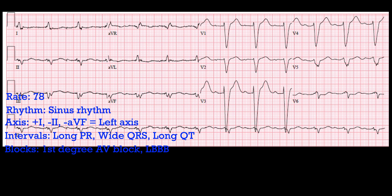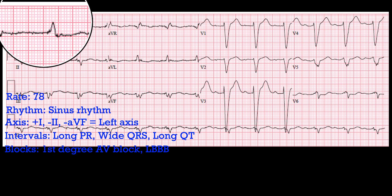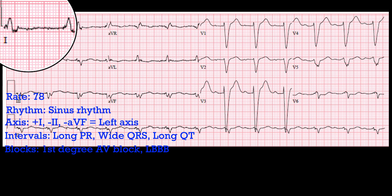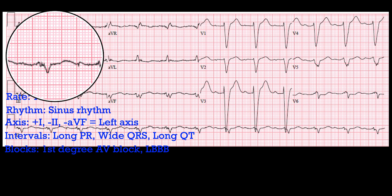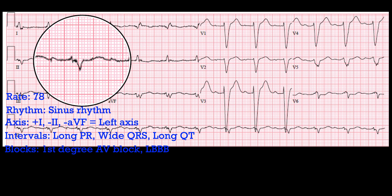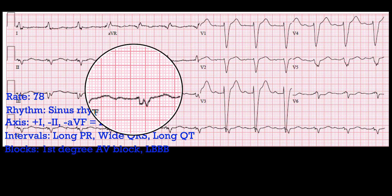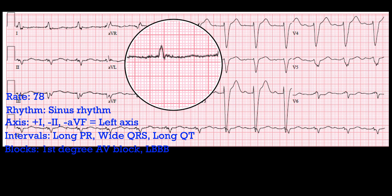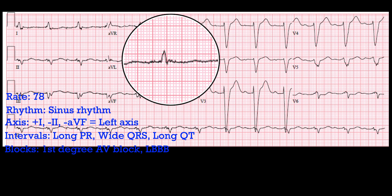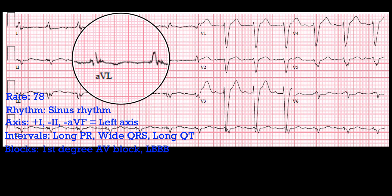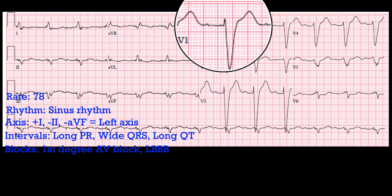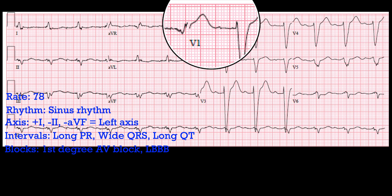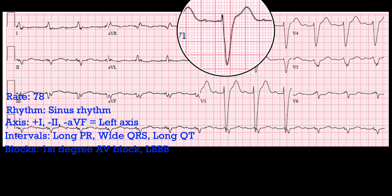How about ischemia and infarcts? We've had something abnormal on pretty much all of these — let's see if we have anything abnormal on the ischemia and infarct side. We're looking for ST depression, ST elevation, and flipped T waves. Sliding down — maybe there's a little bit of ST depression there, but the baseline is a little wandery. In other leads it doesn't really look convincing. Maybe a little flipped T wave in lead AVL, which sometimes happens in that lead. With a left bundle, whichever direction the QRS complex is going, we would probably expect the ST segment to go in the opposite direction.